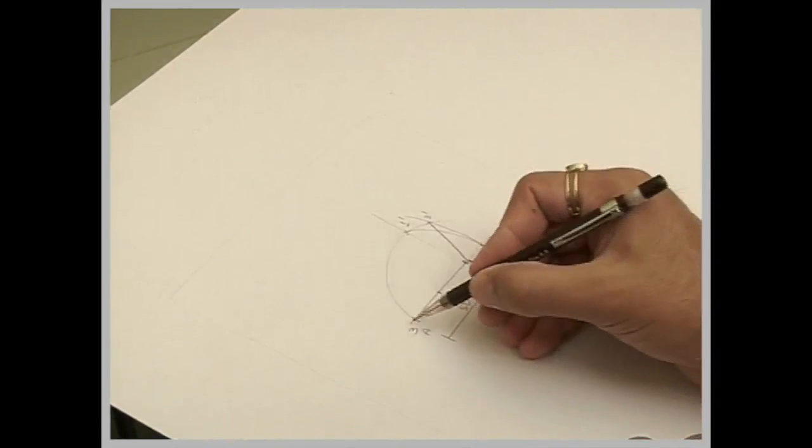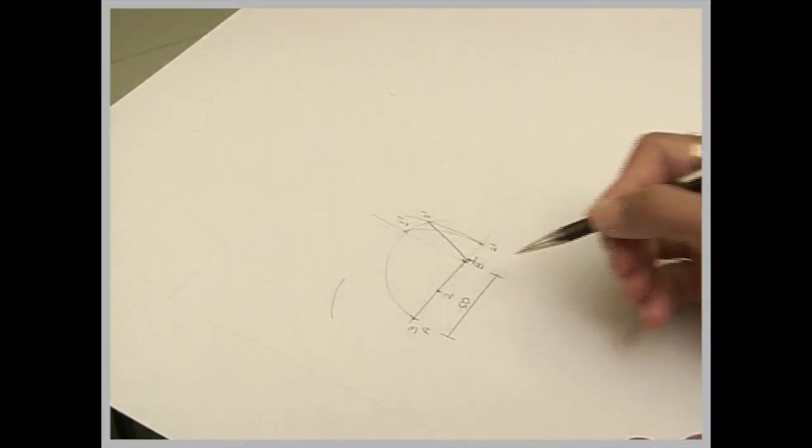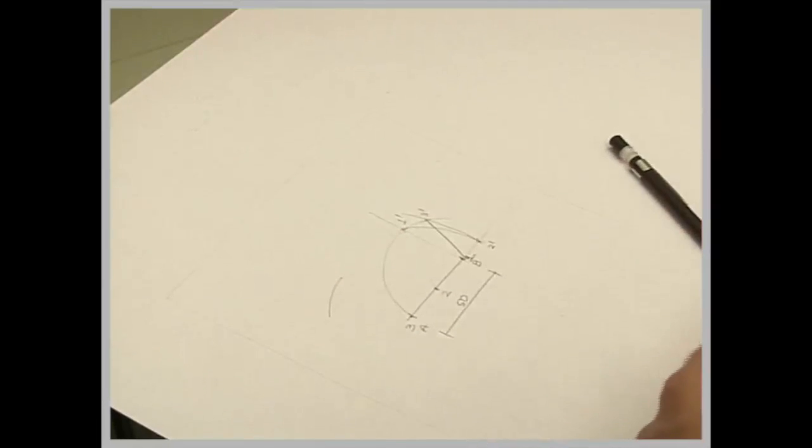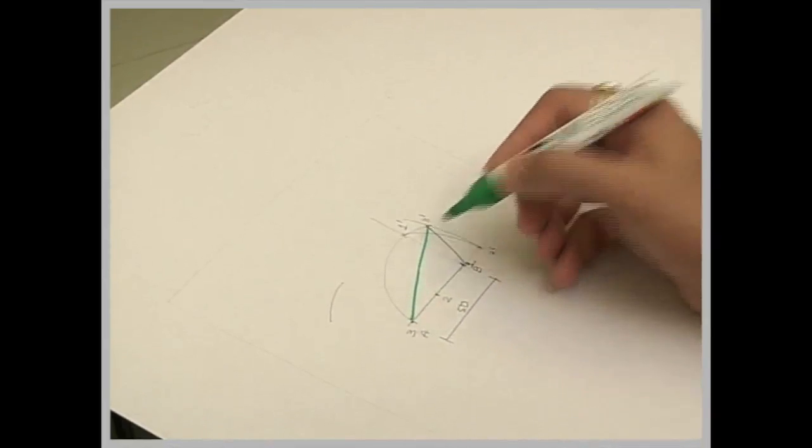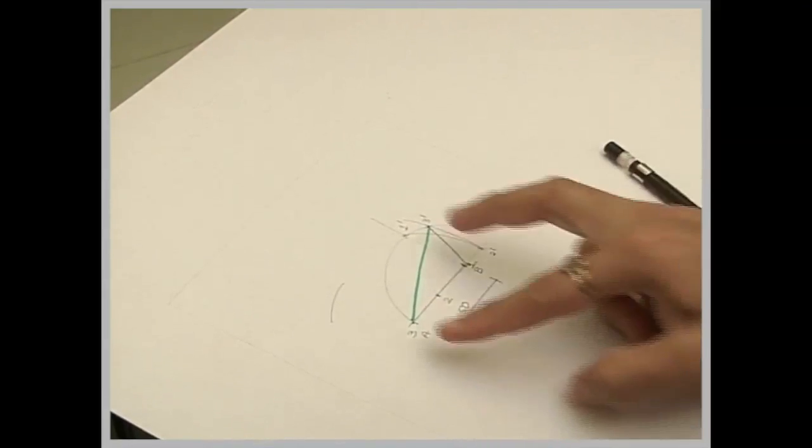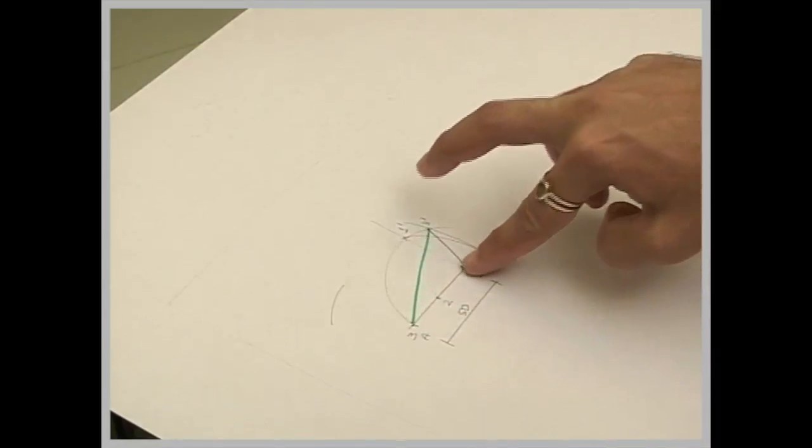Now I will take 50 and from A cut on this side. Then I will take the diagonal, that is 3 to 3', in my compass, and from point 1 I will cut.